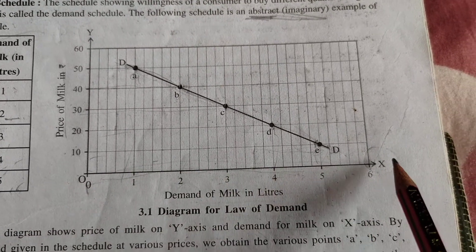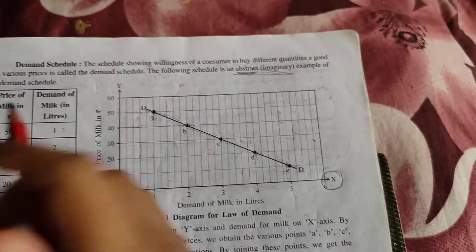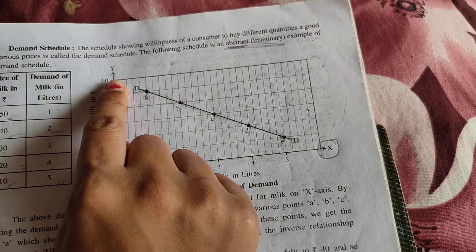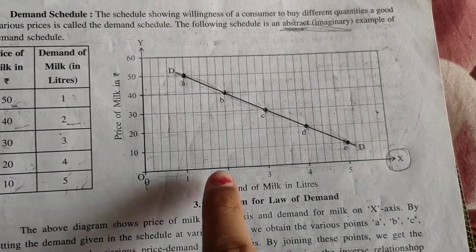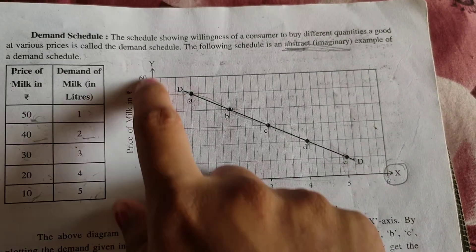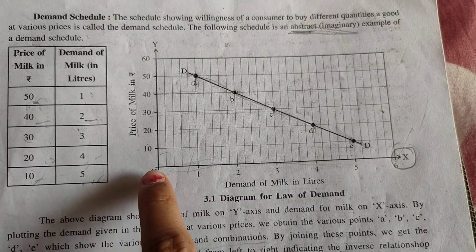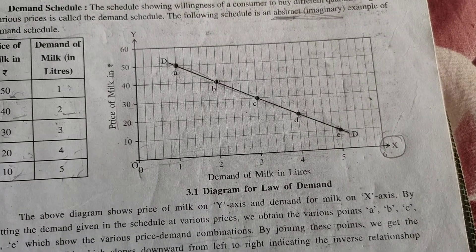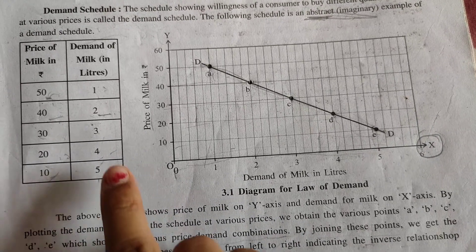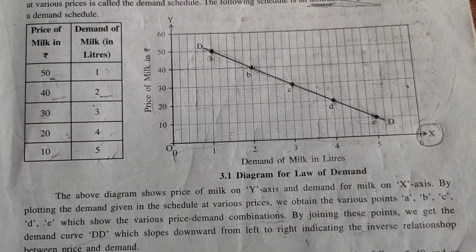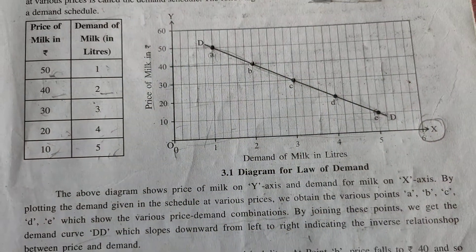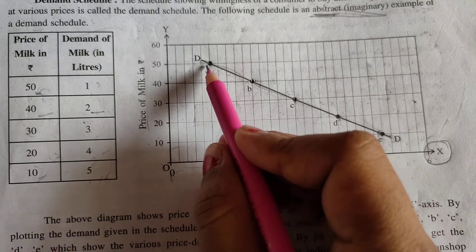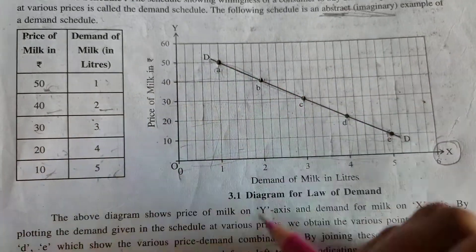The horizontal line is known as the x-axis, and the vertical line is known as the y-axis. The graph always starts with 0. When the price is 50, the demand is 1 litre — plot a dot.